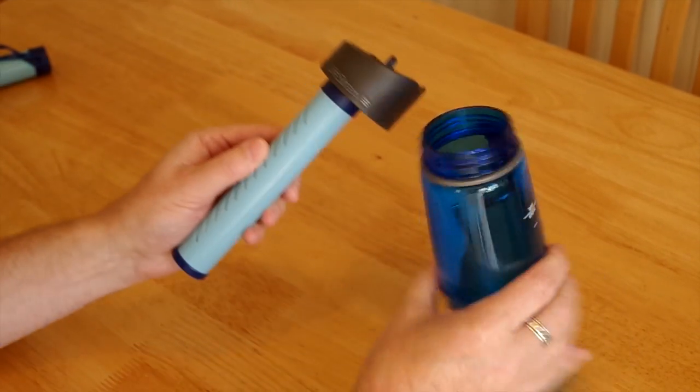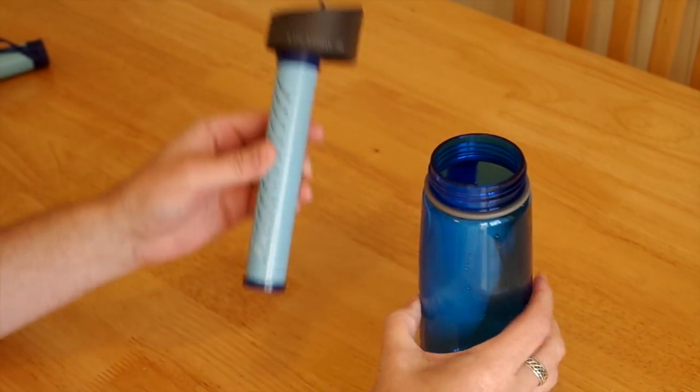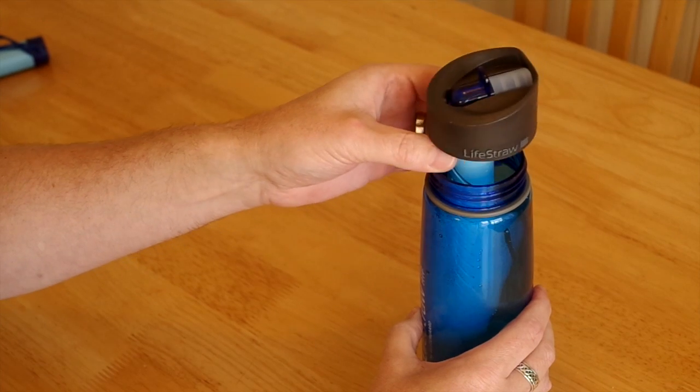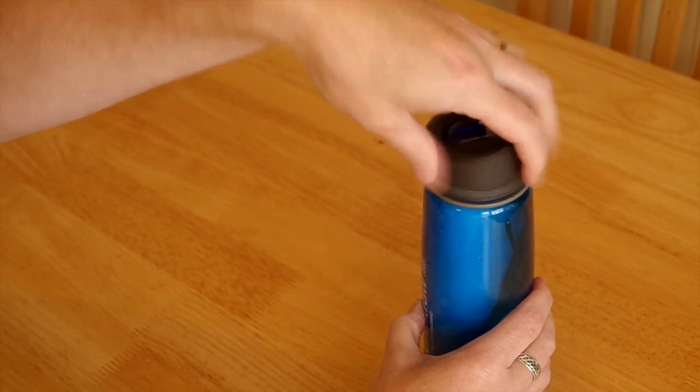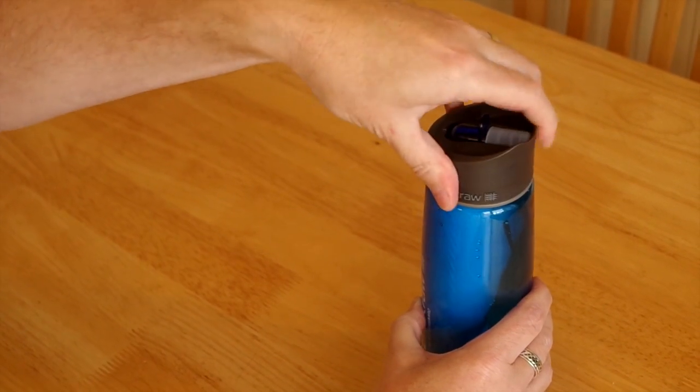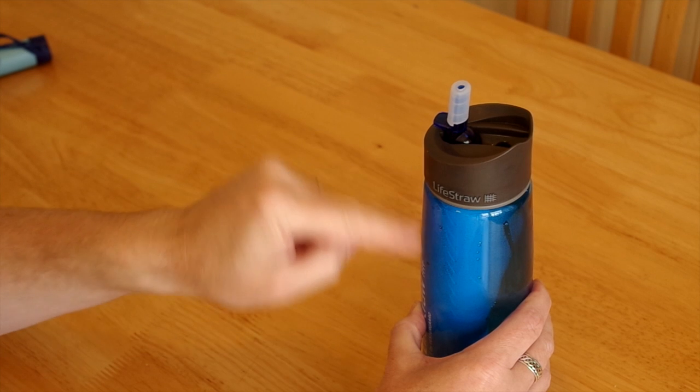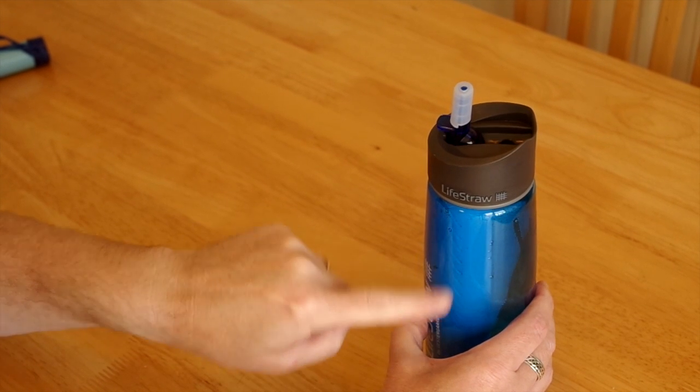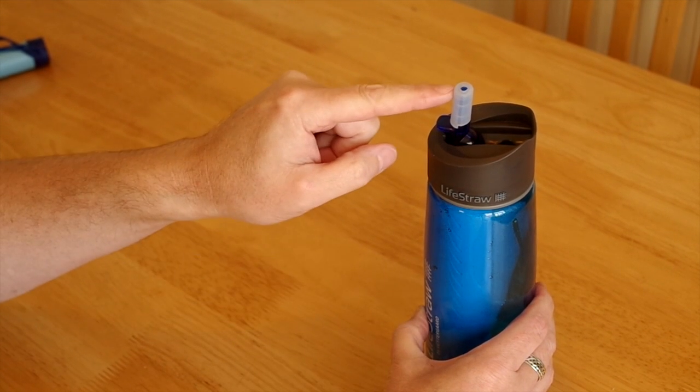You actually scoop some water out. I've done this outside so you can see an outdoor review of this. Screw your top back in, lift your lid and then you've got water to drink straight from the canteen.